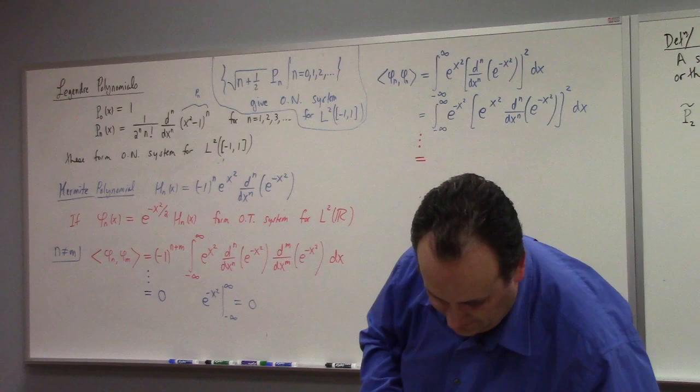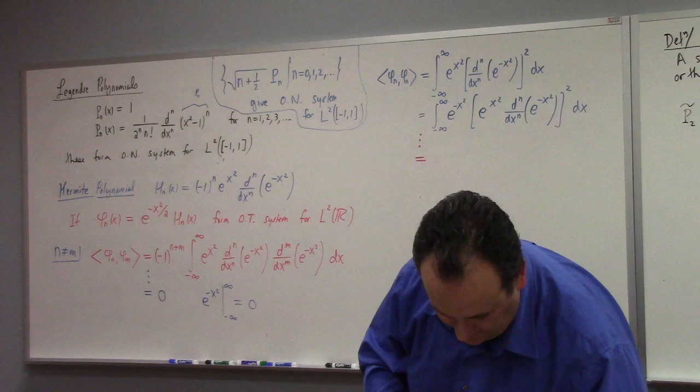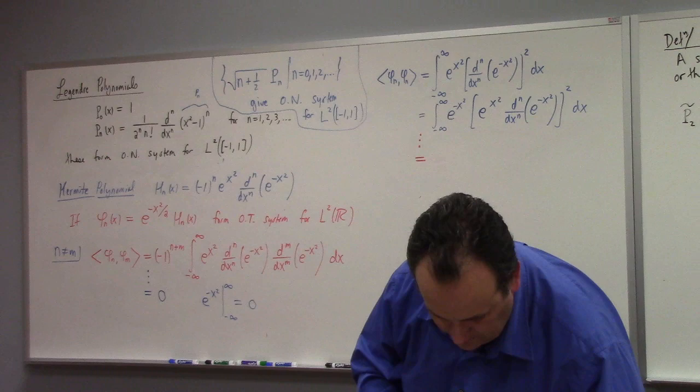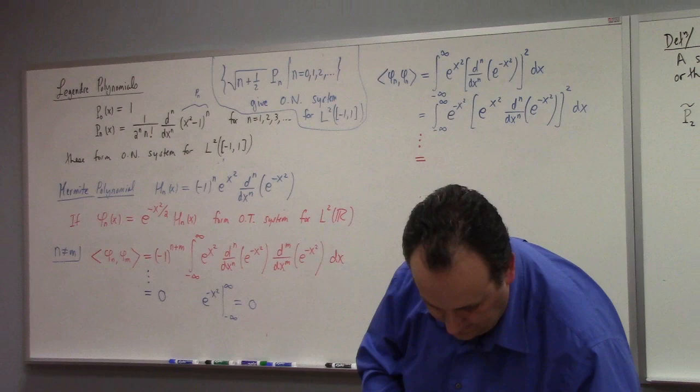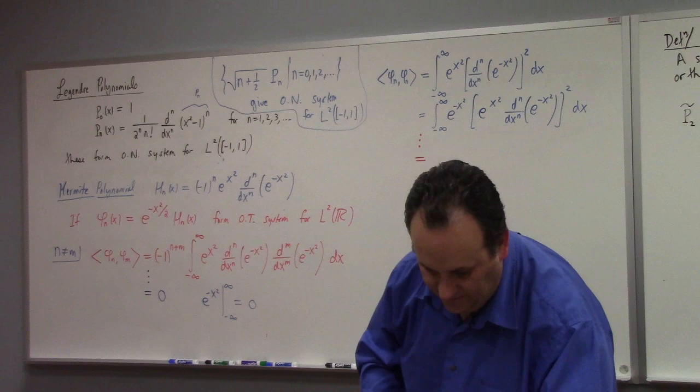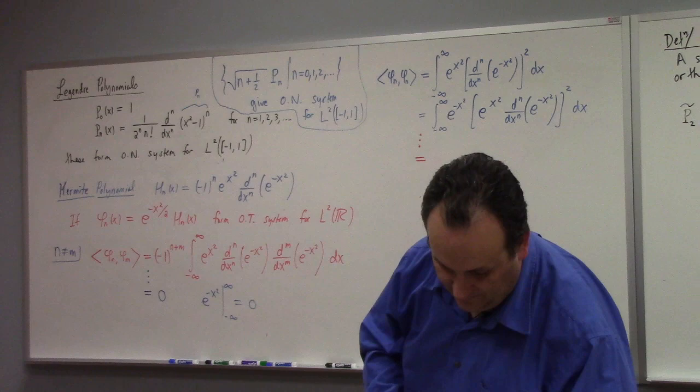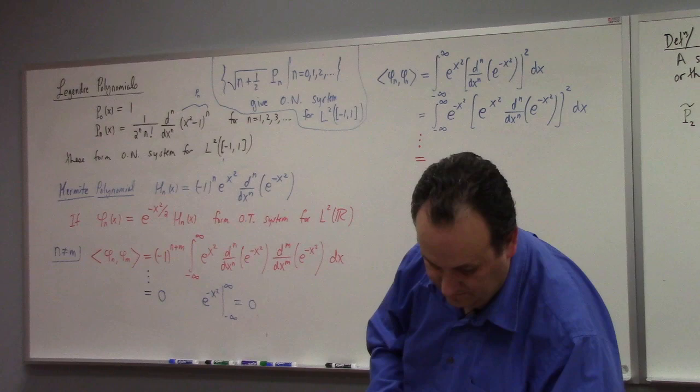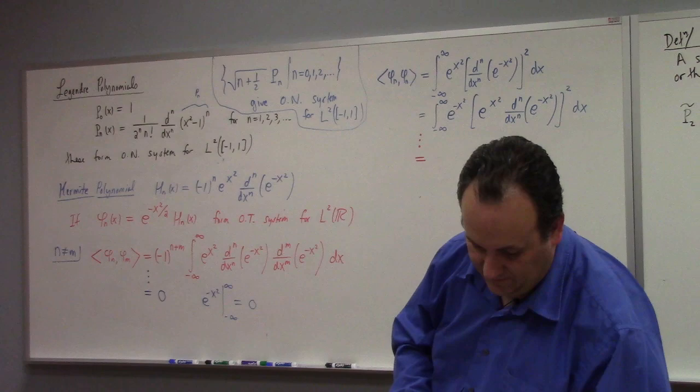But n-fold integration by parts gets us to, allegedly, where did it go to? Yeah. Oh, eventually, eventually he gets to two to the end. Well, eventually he finds his way, and this is not immediately after where we are, but after some time in calculation, he finds his way to 2 to the n times n factorial times the square root of pi.